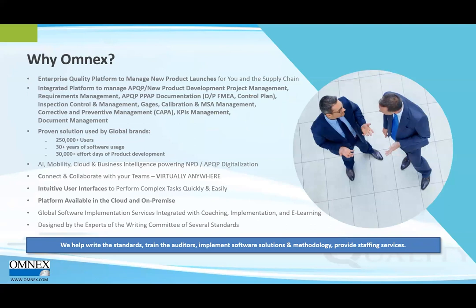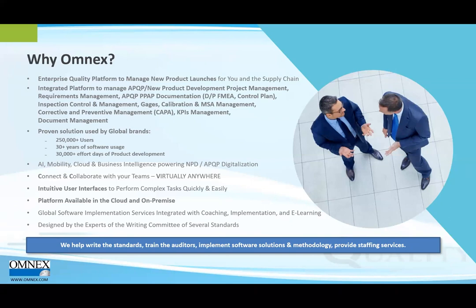The next question is: why Omnex? Because we are an enterprise-quality platform to manage new product launches for you and your supply chain. We have integrated platforms to manage APQP, new product development, project management, APQP/PPAP, documentation such as design and process FMEAs, and inspection control. We have a proven solution used by global brands — 250,000 plus users, 30 plus years of software experience, 30,000 plus effort days of product development. Incorporated in our software are artificial intelligence, mobility/mobile apps, cloud, and business intelligence powering NPD and APQP digitalization.